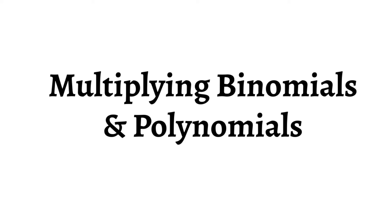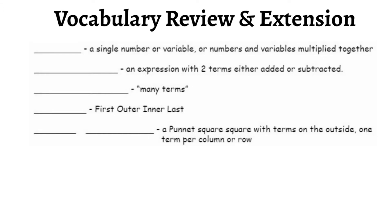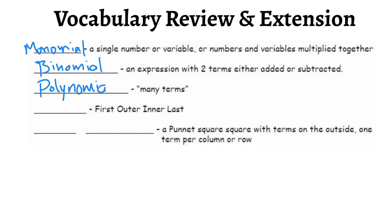Let's start by defining a few of these words. I'm talking about monomials, binomials, polynomials. When you're dealing with a single term — a number or variables put together — we call this a monomial. When you're doing two or more terms that are being added or subtracted together, we call that a binomial. And then when you have more than two terms — three or more — being added or subtracted together, we call that a polynomial.